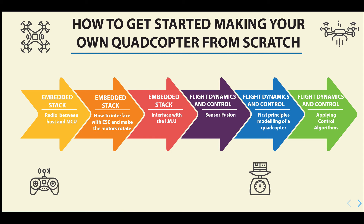Before designing the control algorithm, we need to understand how to model the quadcopter — the transfer function or state space depending on how we're modeling the system. What is the mathematical model of the quadcopter, and how can we model it based on first principles? By first principles I mean looking at the physics: what's the weight of the quadcopter, what are the dimensions, what's the center of gravity, what's the moment of inertia? All of those things can be mathematically measured.